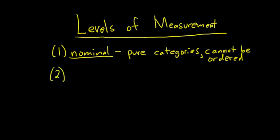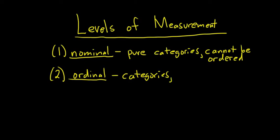The second level of measurement is called ordinal. These are still categories, so you can't add them up or perform math operations with them. But unlike nominal, you can order them. A simple example would be performance at work: bad, okay, good. Bad is less than okay, which is less than good — so these are categories you can clearly order.